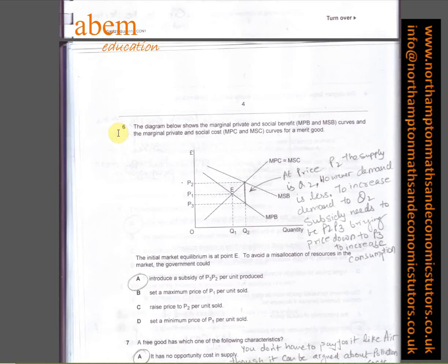In question number six, the diagram below shows the marginal private and social benefit curves and the marginal private and social cost curves for a merit good. The initial market equilibrium is at point E. To avoid a misallocation of resources in the market, the government should provide a subsidy of P2 to P3.